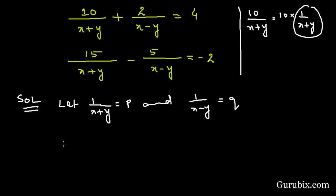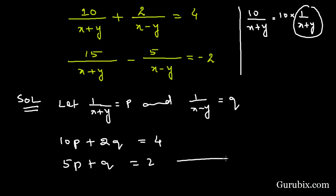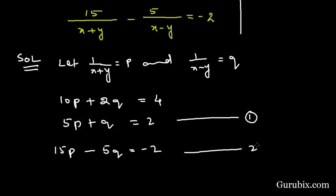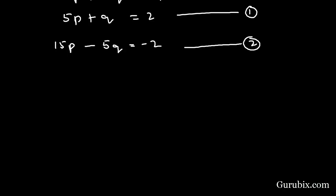Then our equations become: 10p plus 2q equals 4. We can divide both sides by 2, giving 5p plus q equals 2 — let this be equation number 1. Moving to the second equation, it becomes 15p minus 5q equals minus 2 — let this be equation number 2.